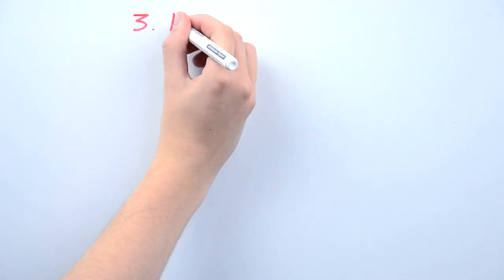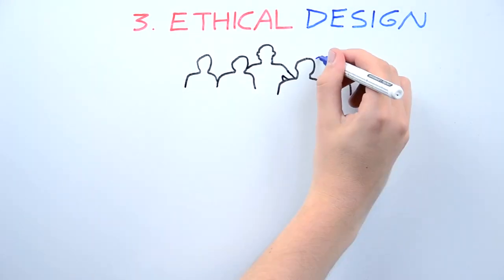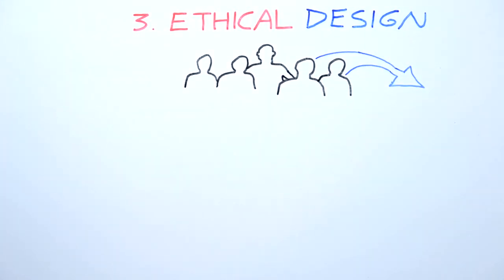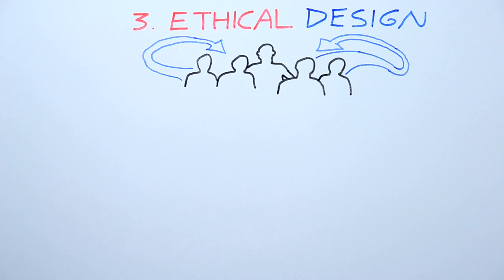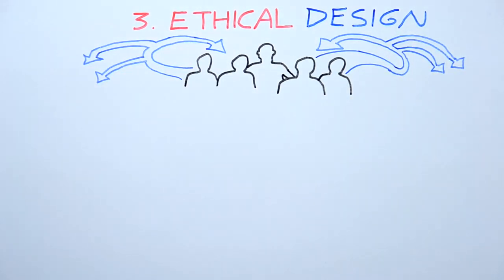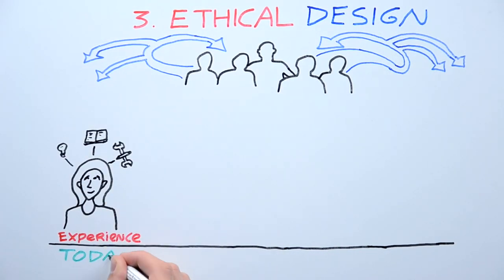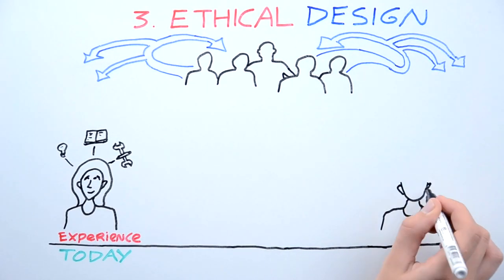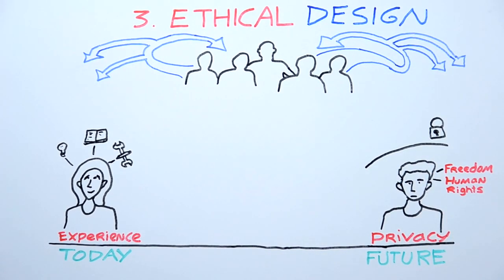And that is ethical design. Instead of us designing things for the other, we must build diverse organizations, which by designing for themselves, can design for a diverse audience. We can build things that empower you with great experiences today, but which also protect your privacy and your human rights and freedoms in the future.